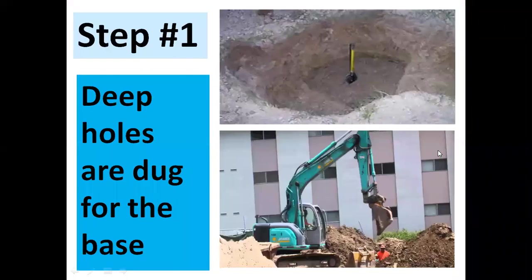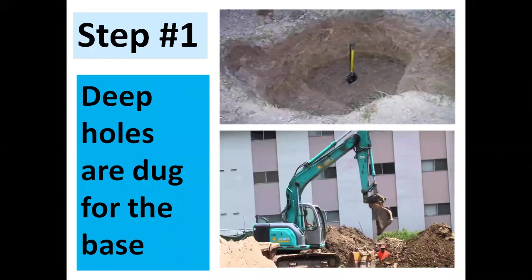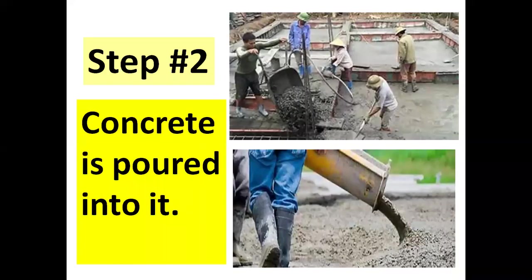Now, construction procedure, step by step. I am going to tell you how construction of a building takes place. Step one: deep holes are dug for the base. Builders and labors dig deep holes for a strong base. Step two: concrete is poured into it.